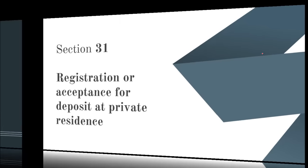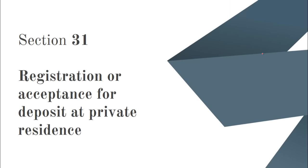Section 31 talks about registration and acceptance for deposit at private residence. In ordinary cases, for registration or deposit of a document you have to personally go to the office. But if there is a special cause, that particular officer can accept the document for registration at a private residence, or if there is a will, you can deposit it there. These are exceptional cases — otherwise you have to go to the place of the particular officer.